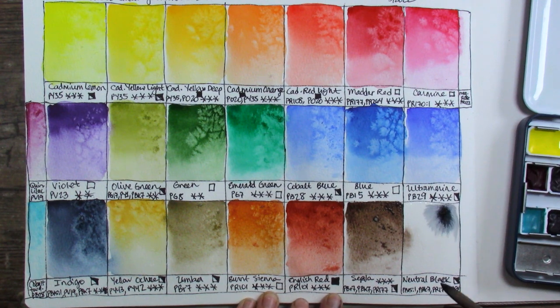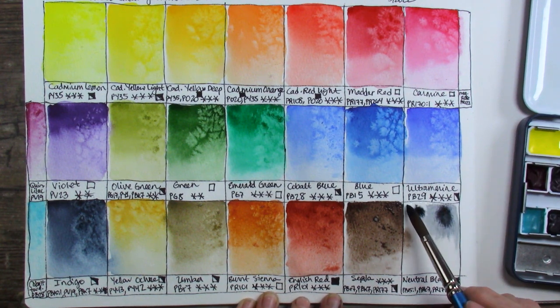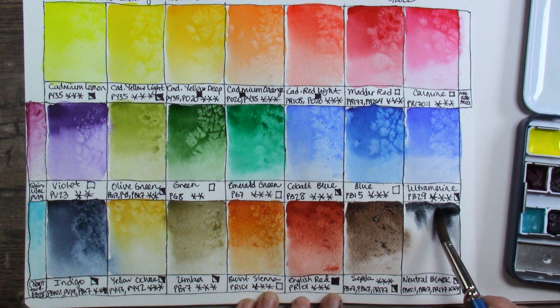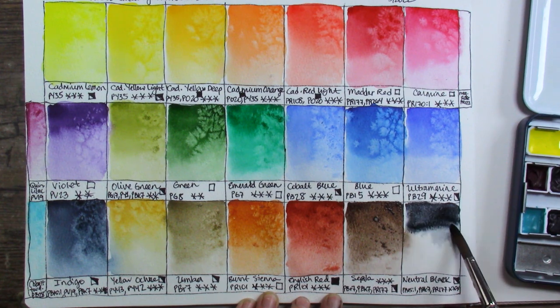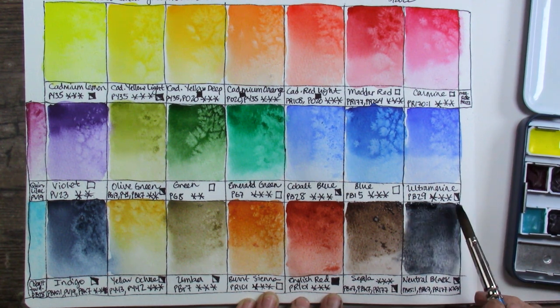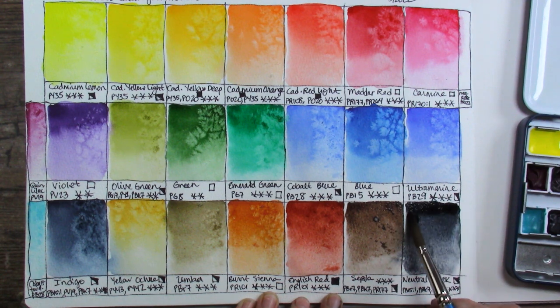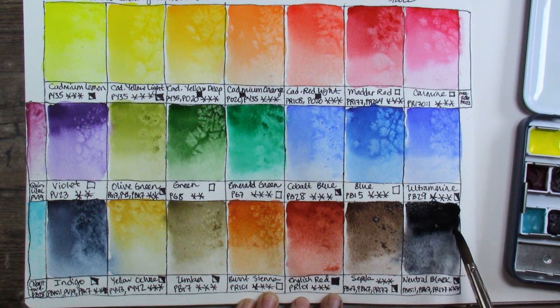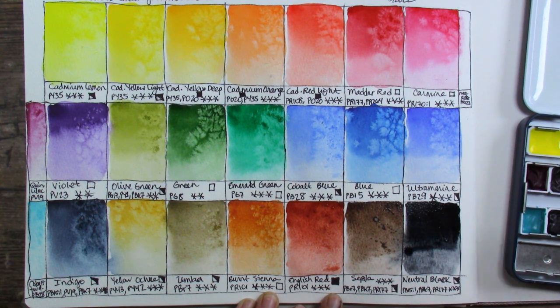Next we have neutral black, PB15:1, PBK7, and the PR177. So this and the sepia both have that PR177 in it so they might be subject to some fading even though they say three star lightfast rating in their gradient. They'll probably fade so we'll find out when I do my lightfast test.